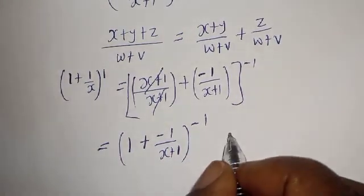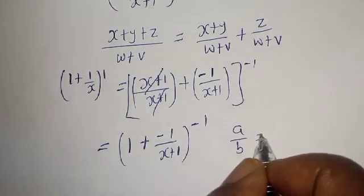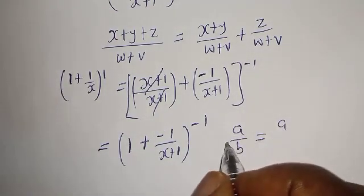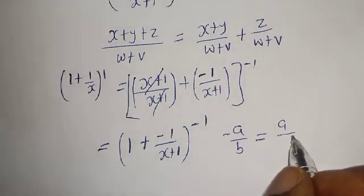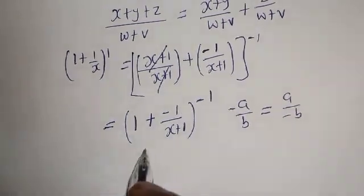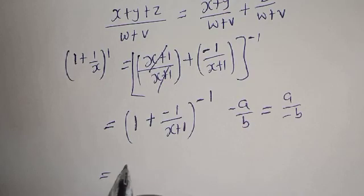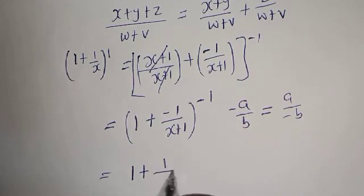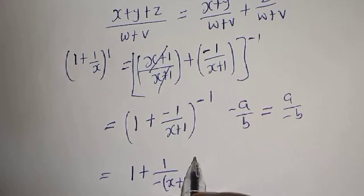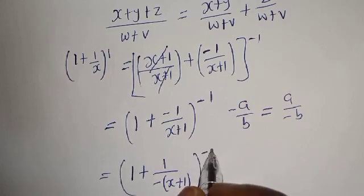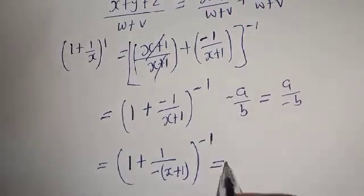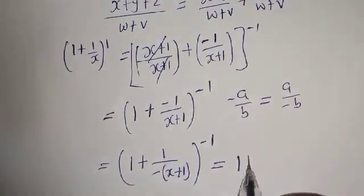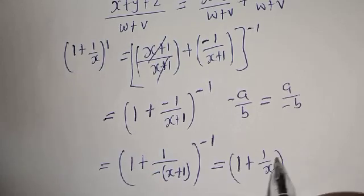Now, if you have a over b to the power of minus 1, this can be written as 1 plus 1 over minus s plus 1 — that is, 1 plus 1 over s, to the power of minus 1 — which is equal to 1 plus 1 over s, to the power of 1.